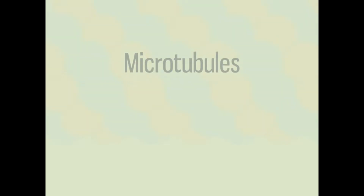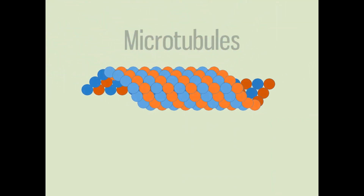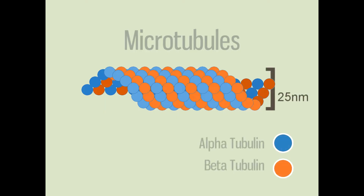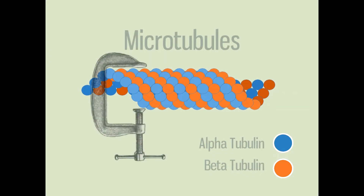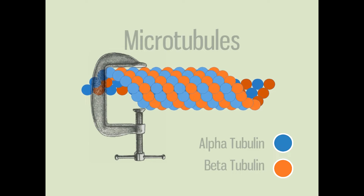Microtubules are the largest cytoskeletal structures. They are composed of pairs of tubulin protein molecules, alpha-tubulin and beta-tubulin. Long chains of tubulin pairs, or dimers, are organized into a hollow tube shape. The shape of the tube gives it strength, and it can resist a lot of compression force and still maintain its hollow shape.